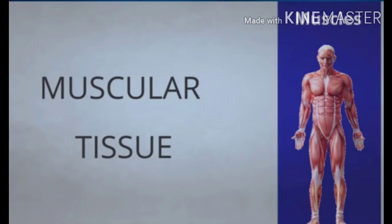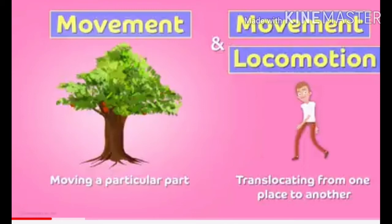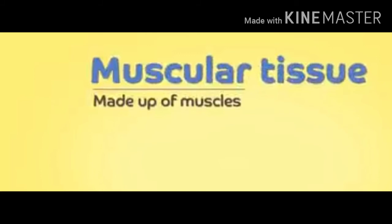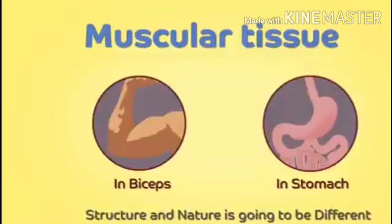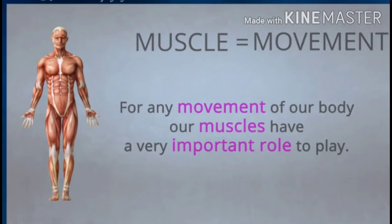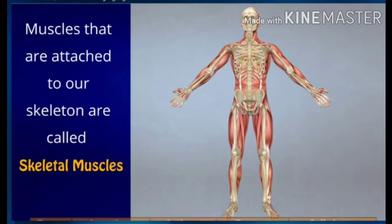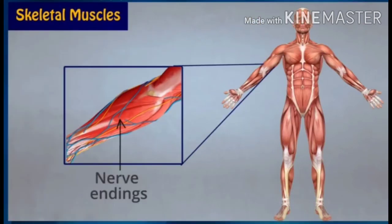Now we will study about muscular tissue — movement and locomotion. Movement means moving while standing or sitting at a particular place; locomotion means change of location. Muscular tissue is made up of muscles, which may be present in our stomach or in our biceps, so the structure differs according to location. Muscles have a very important role in any movement of the body, and the muscles attached to our skeleton are called skeletal muscles.